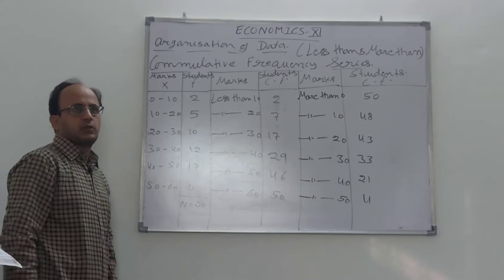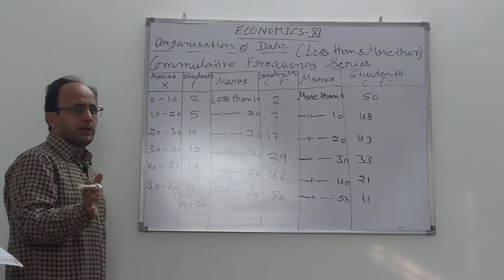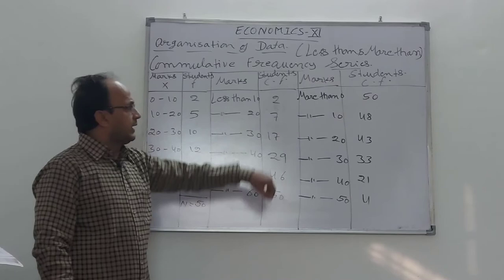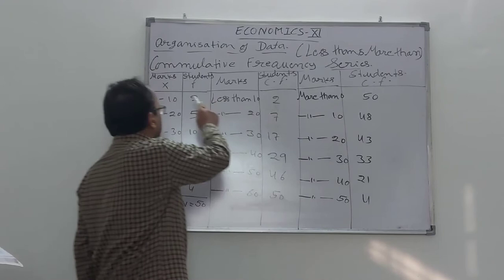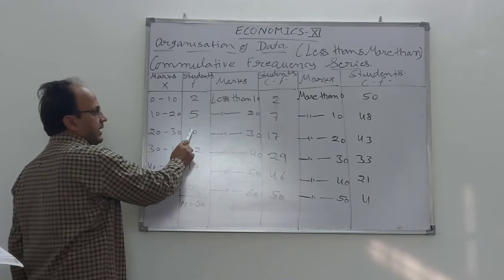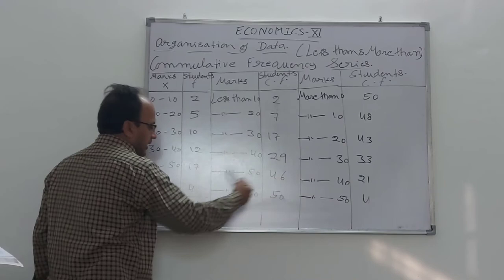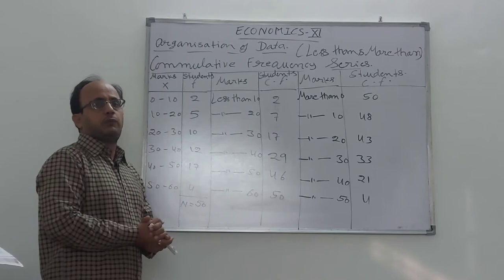Now we change more than cumulative frequencies into normal frequencies. More than 0 is 50 and more than 10 is 48, so the frequency for 0 to 10 is 50 minus 48 equals 2. Then 48 minus 43 equals 5. 43 minus 33 equals 10. 33 minus 21 equals 12. 21 minus 4 equals 17. And the last frequency is 4. So by this way we change more than cumulative frequencies into normal frequencies.